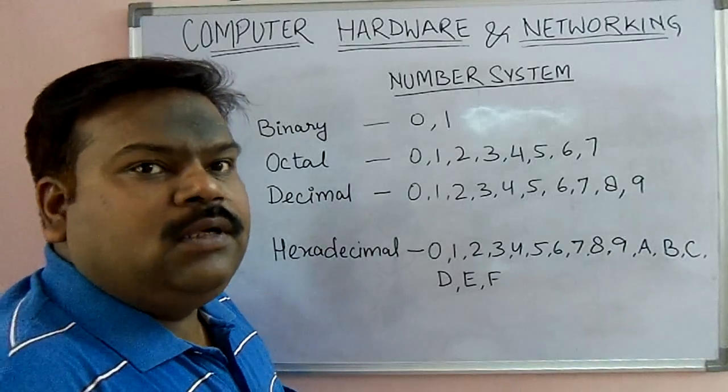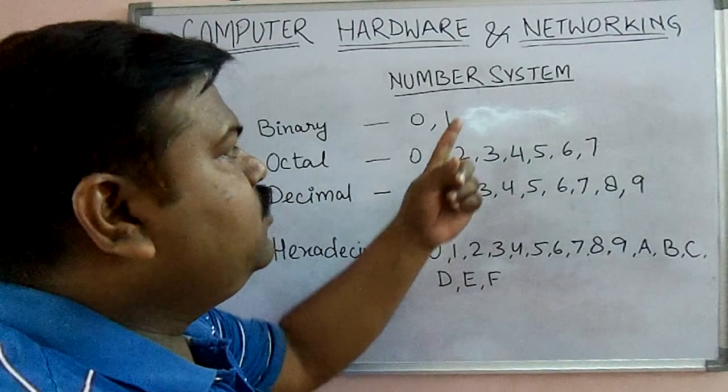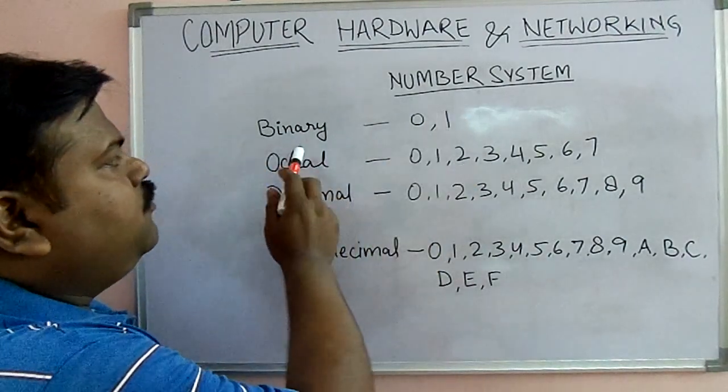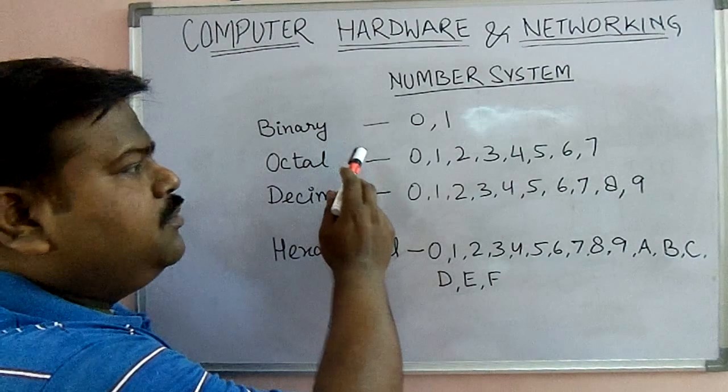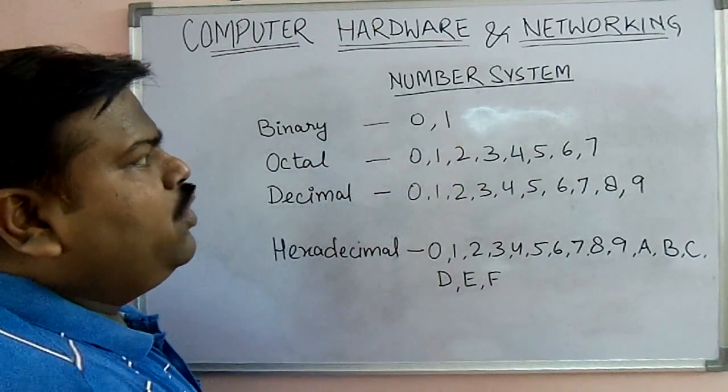Now we will see number system. First one is binary number system. Binary number system has two digits, zero and one.